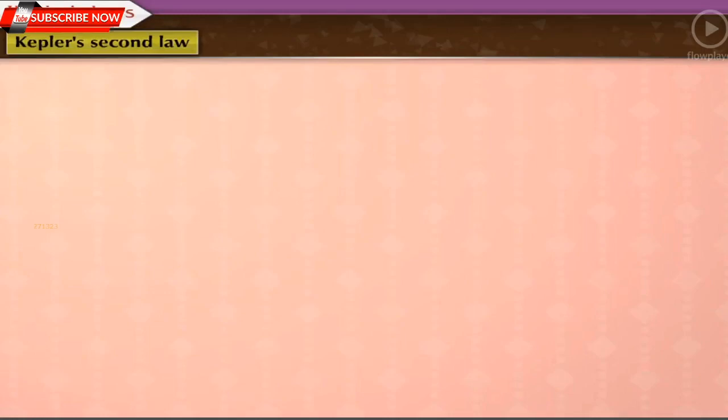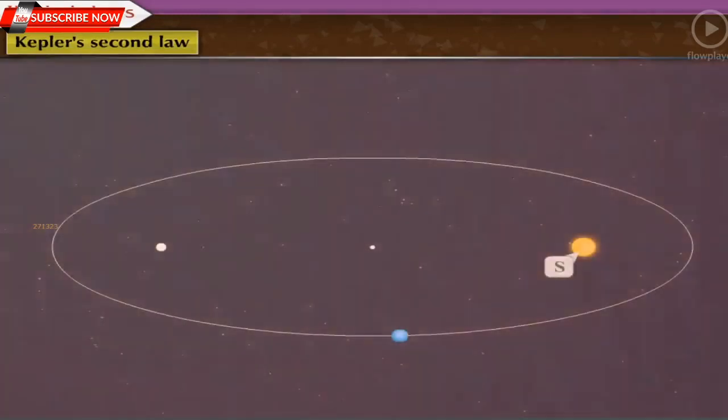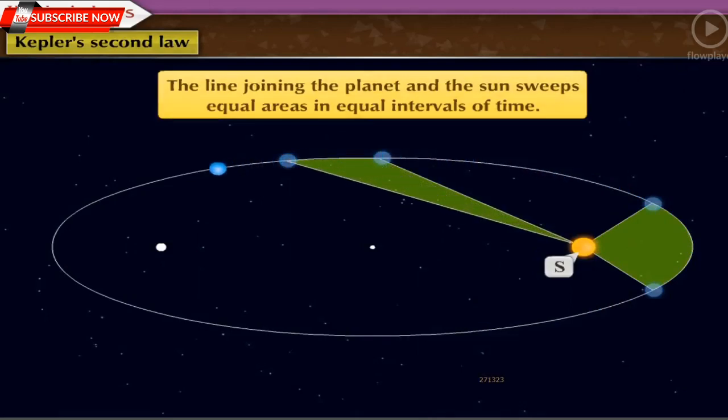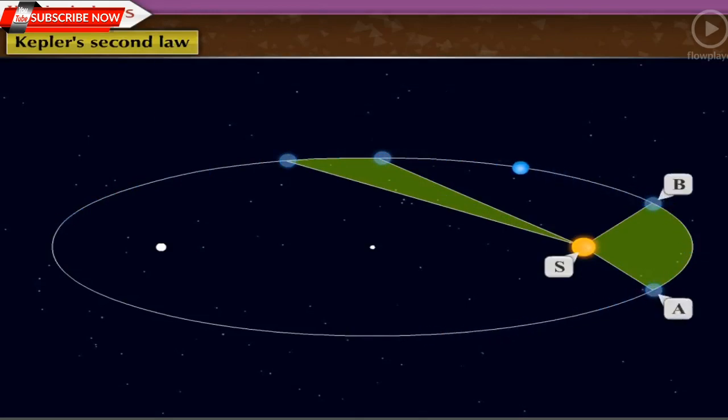Kepler's Second Law. The line joining the planet and the sun sweeps equal areas in equal intervals of time. A, B and C, D are the distances covered by the planet in equal intervals of time.